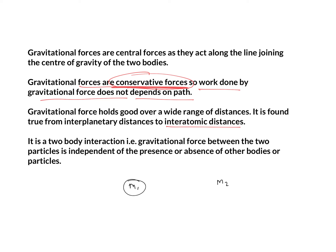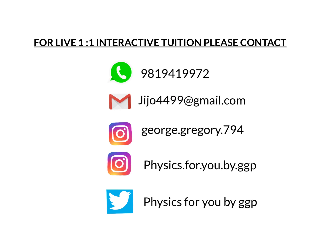If two bodies interact, the gravitational force between them is independent of the presence or absence of other bodies. For example, if masses m1 and m2 attract each other with force F, placing a third mass m3 nearby does not change the force between m1 and m2 — it remains F. Hope you understood whatever we discussed in this class. If you have any doubt, please feel free to ask. Thank you.